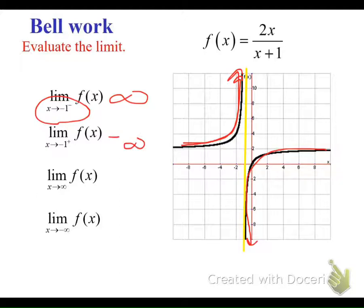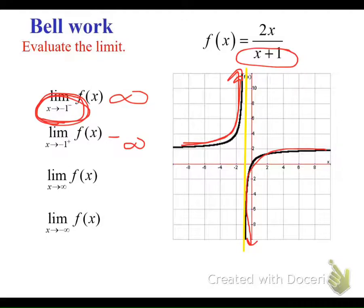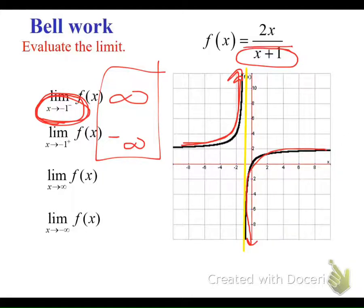I want you to try to remember this. As you approach a vertical asymptote — there's a vertical asymptote at negative 1 because this denominator can't be 0 — if I ask you the limit as you're approaching a vertical asymptote, the answer has to be infinity or negative infinity. Don't forget that. And the key is knowing when a vertical asymptote occurs: when you have division by 0 but the factor doesn't cancel with another factor on top.